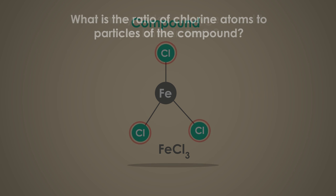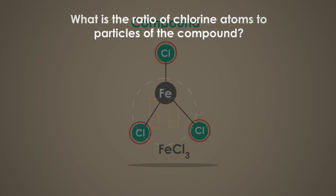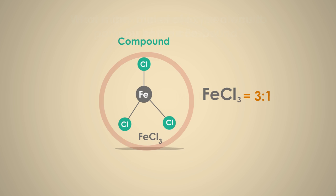What is the ratio of chlorine atoms to particles of the compound? Pause the video whilst you think. 3 to 1. There are 3 chlorine atoms per formula unit.